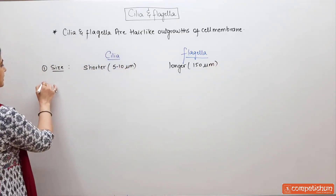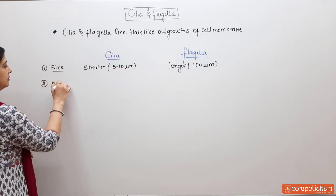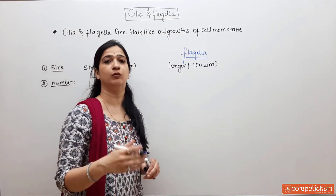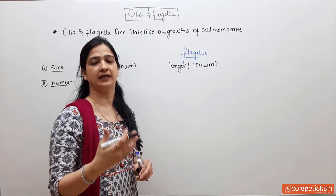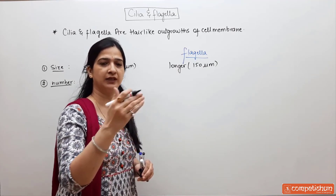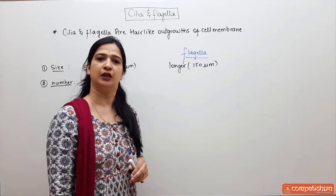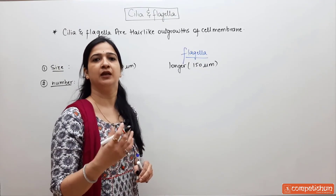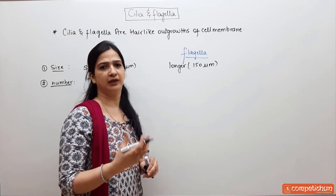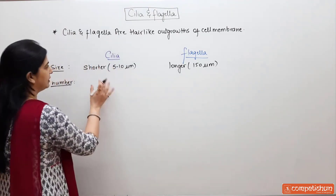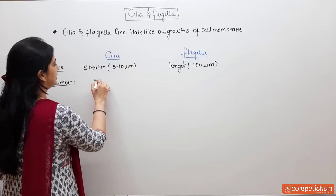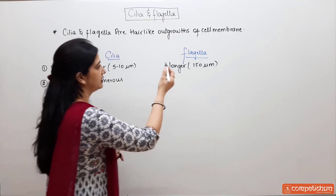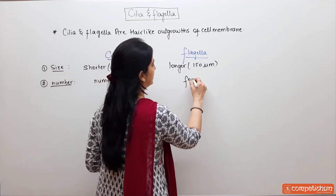The second point is number. When we talk about number, cilia are more numerous on a cell. Flagella are fewer in number.